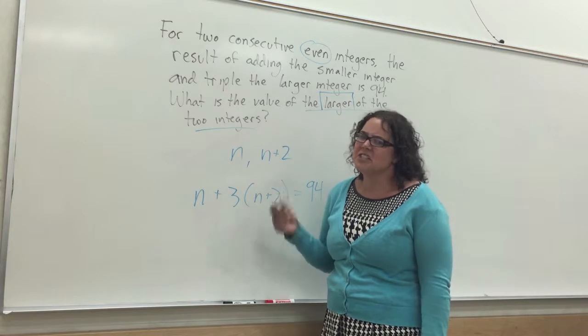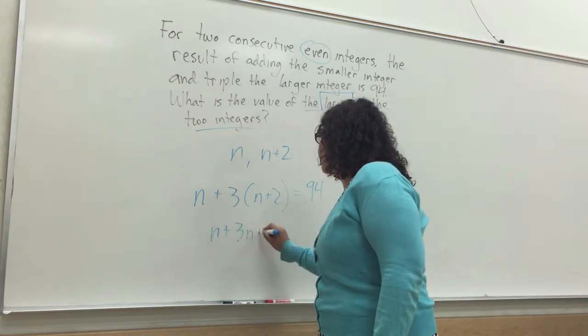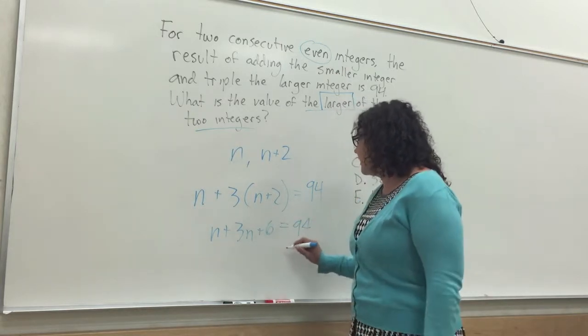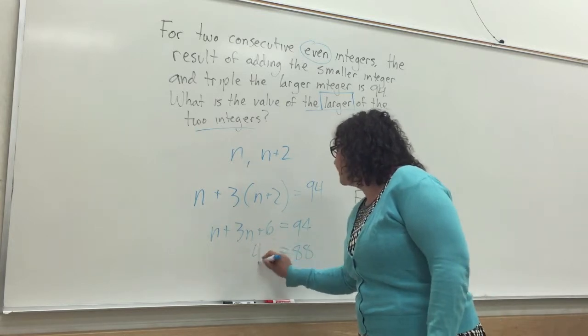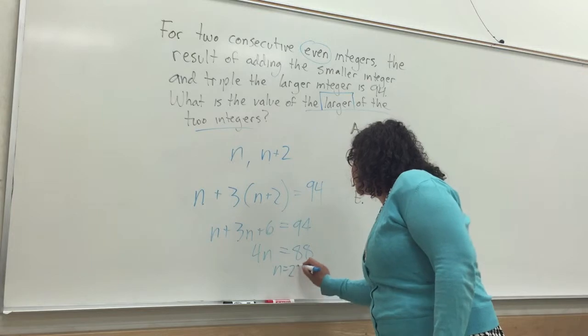From here, it's pretty straightforward. You just go ahead and simplify. So we have n plus 3n plus 6 is 94. Go ahead and subtract that, and we get 88. 4n is 88, which means n must be 22.